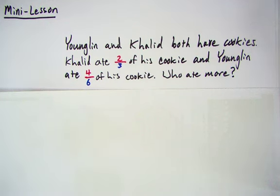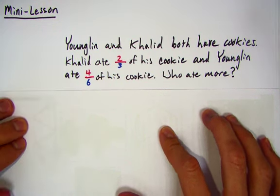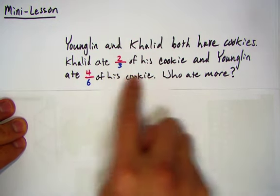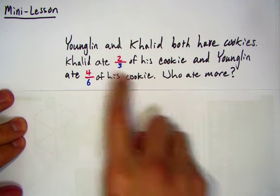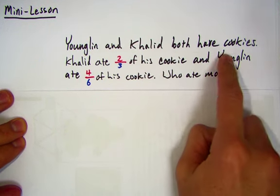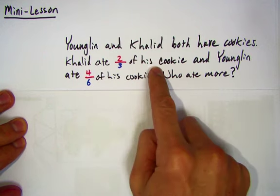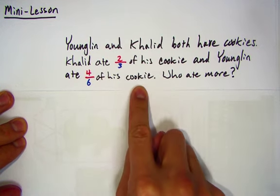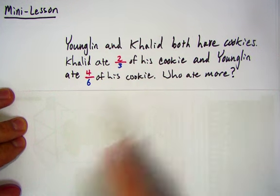Hello third graders. This is the Equivalent Fractions mini lesson and we're going to get started by reading a story problem. Young Lin and Khaled both have cookies. Khaled ate two-thirds of his cookie and Young Lin ate four-sixths of his cookie. Who ate more?